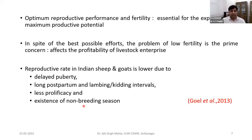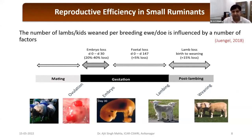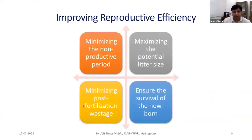In addition, embryonic mortality is also a major concern. Nobody is focusing on this aspect of embryonic mortality and fetal losses. Reproductive efficiency is presented in terms of number of lambs or kids weaned per breeding ewe or doe in a year. This number will depend on: mating fertility, duration of fertility, number of ovulations, decreasing fetal loss, and loss of newborn animals before weaning. These are the factors which affect reproductive efficiency.